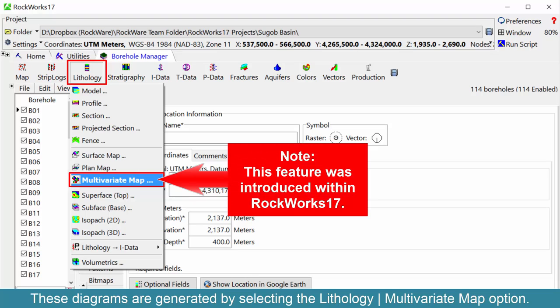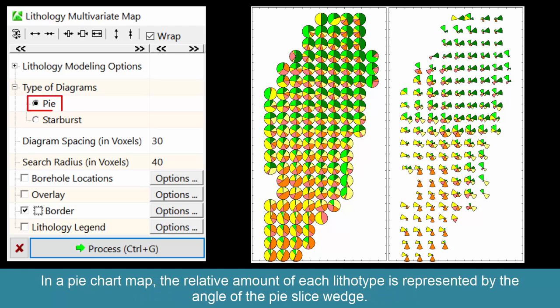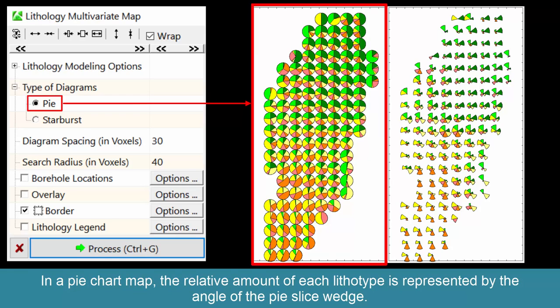Please note that this feature was introduced within RockWorks 17. This program is used to make pie chart and starburst maps that summarize the lithology within the vicinity of each circular area. In a pie chart map, the relative amount of each lithotype is represented by the angle of the pie slice wedge.